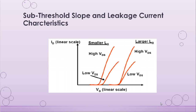Now that we have understood drain induced barrier lowering, let us understand how this affects the subthreshold slope and leakage current characteristics. We will focus on the curve of the smaller gate length, since this is after all a short channel effect. For a higher VDS, the ID vs VG curve has shifted to the left, meaning that for the same VG we now have a much higher ID than before. Hence, the leakage current has increased with an increase in VDS. Similarly, the slope on the left is much higher than on the right, meaning the subthreshold slope has also increased with an increase in VDS. Hence, drain induced barrier lowering causes both leakage current and subthreshold slope to increase, both of which are undesirable effects.